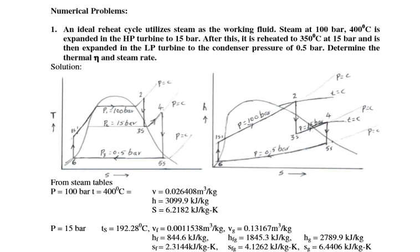Today we are going to study some numericals based on the reheat cycle and regenerative cycle. Numerical one: An ideal reheat cycle utilizes steam as a working fluid. Steam at 100 bar and 400 degree Celsius is expanded in the high pressure turbine to 15 bar. After this, it is reheated to 350 degree Celsius at 15 bar and then expanded in the LP turbine to the condenser pressure of 0.5 bar. Determine the thermal efficiency and steam rate.